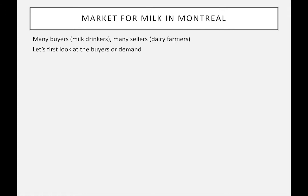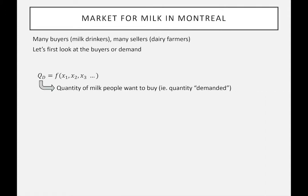We'll look first at the buyers, or what we call the demand curve — sometimes the demand function. Mathematically, in economics, we form the hypothesis that there's some quantity demanded, QD, which is the amount of milk people would like to purchase added up across a whole series of households, families, or individuals. This quantity is based on a series of factors: X1, X2, X3, X4, and so on.